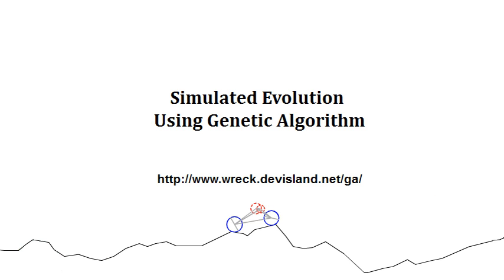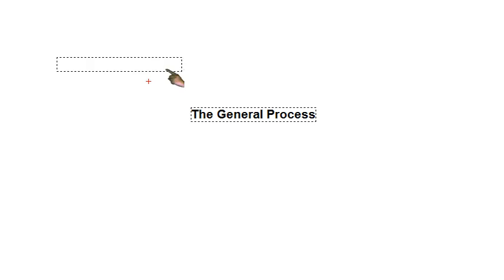The general process for genetic algorithms goes like this. In a nutshell, the initial step is basically just generating a bunch of random creatures that have parameters that you can mutate.